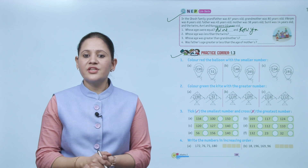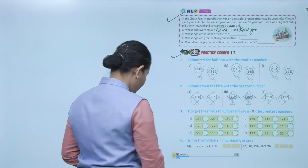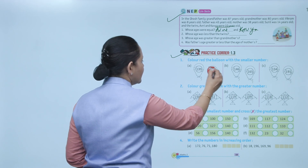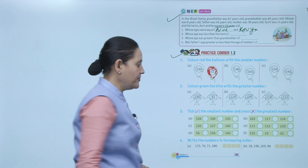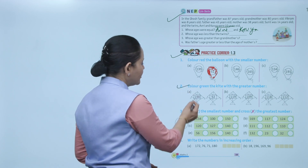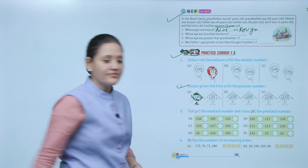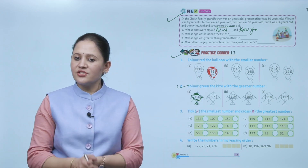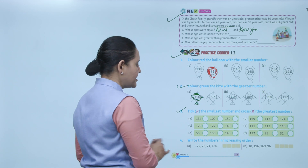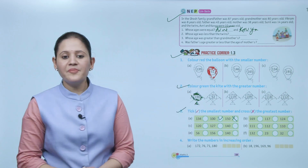Next: Practice Corner 1.3. Color red the balloon with the smallest number — numbers are 139 and 51, so 51 is smaller, color it red. Next: color green the kite with the greater number — the greater number is 190, so color that kite green. Next: circle the smallest number and cross the greatest — the smallest is 100, circle it; the greatest is 150, cross it.